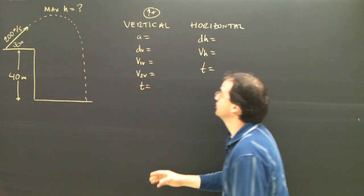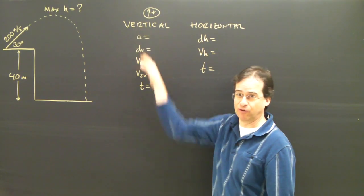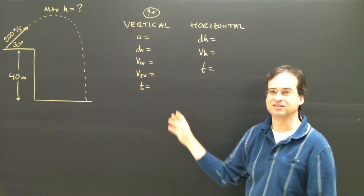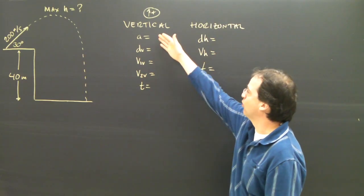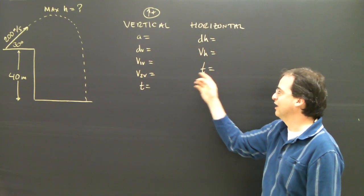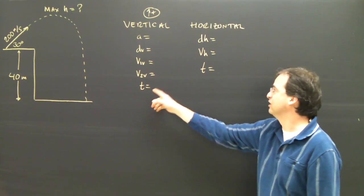Now when we've done projectile problems in the past, we said we'd look at the vertical column and the horizontal column. So if you're not sure what I mean by this, check one of the previous videos. But the idea is I put all my vertical information here, all my horizontal information here, and the only thing that can go from one column to another is the time.